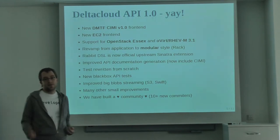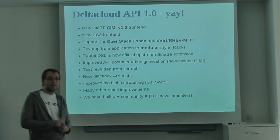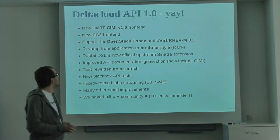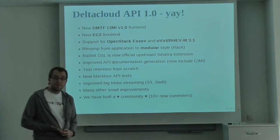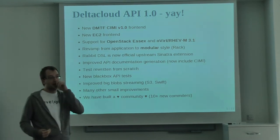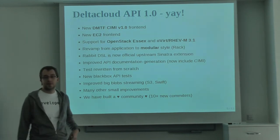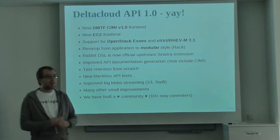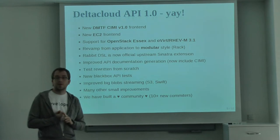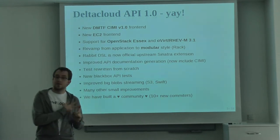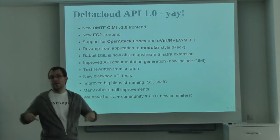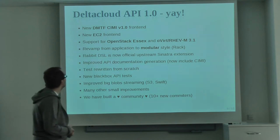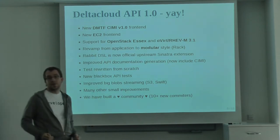OpenStack changed their mind back and decided to keep their EC2 frontend, but we got our EC2 frontend for free. The EC2 frontend means you can talk to Delta Cloud using the EC2 API for any backend provider — RHEV-M, OpenStack, Mocha. You can even talk to EC2 using the EC2 API. You can start instances using the EC2 API. Of course, the EC2 API has limitations — for example, you can't list hardware profiles because EC2 just has them on their website.